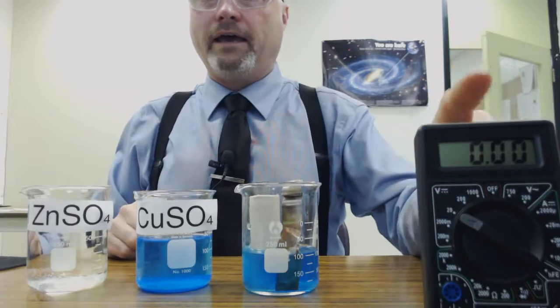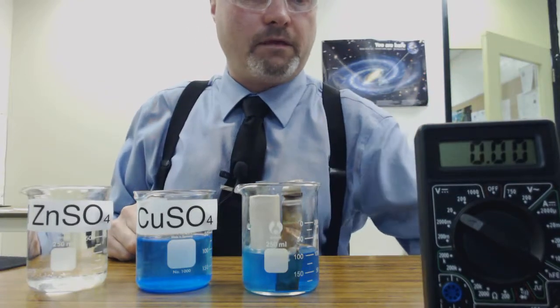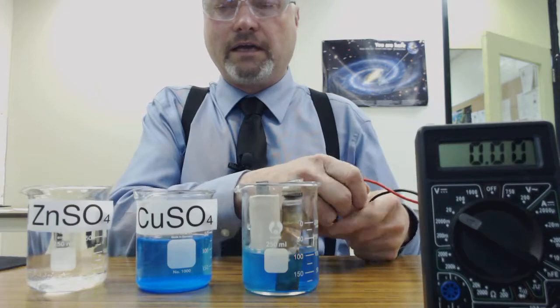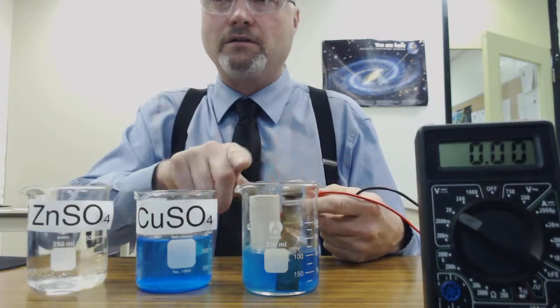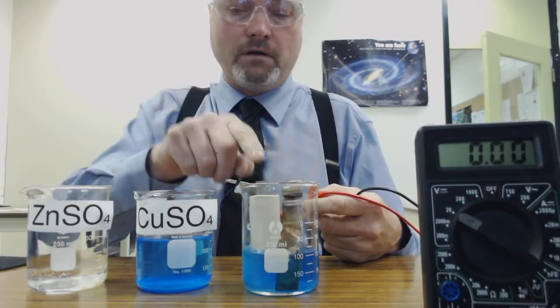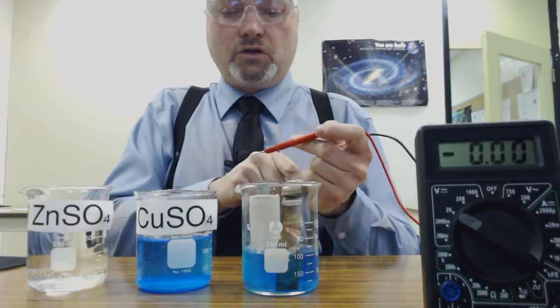So we have a voltmeter right here and what we are going to do is we are going to show that there is a potential difference. In other words, electrons are going to be flowing from the zinc to the copper.